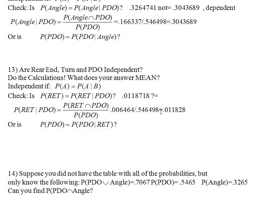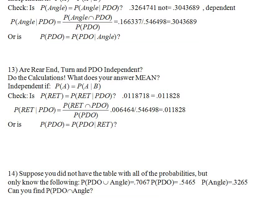Pause the video and calculate. The result is 0.011828. Is that the same as 0.0118718? Not technically, but they are close enough. This gets into the question of how close is close enough. Rear-end turn accidents are 1.18% of accidents, and once you learn it's a property damage only accident, it's about the same. So rear-end turn and PDO are statistically independent.